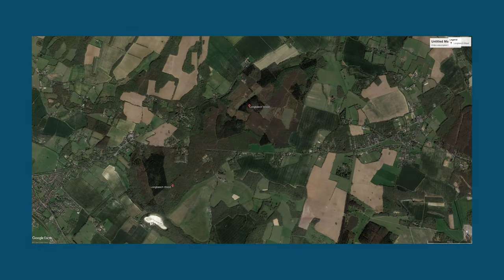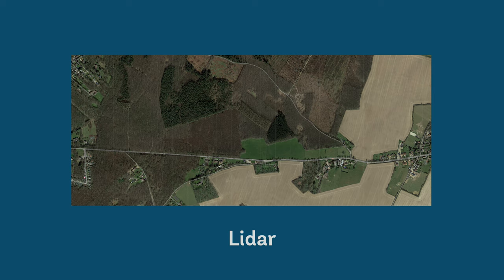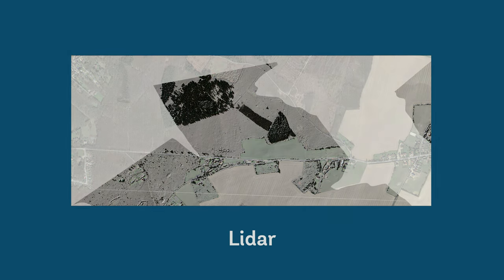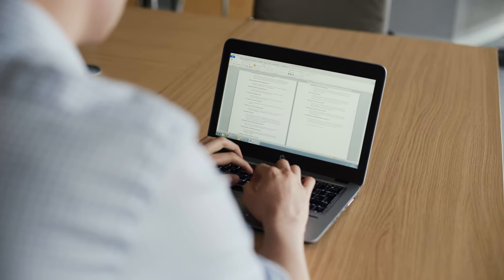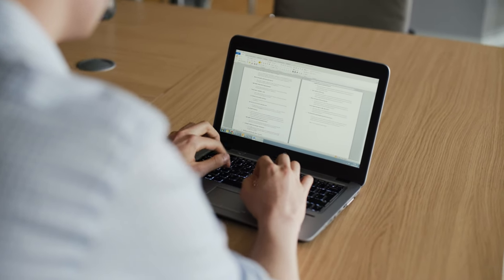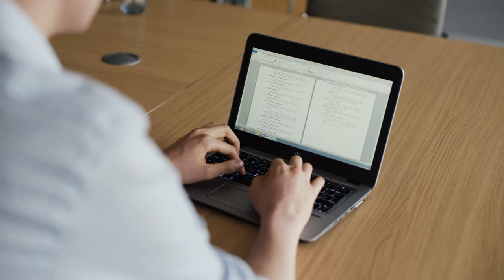In some areas, LiDAR — light detection and ranging data — may be freely available. LiDAR can show the underlying topography and reveal possible archaeological features. You should also check species lists or other available biological surveys.